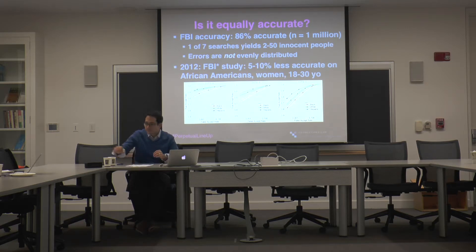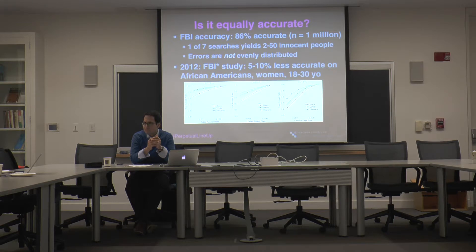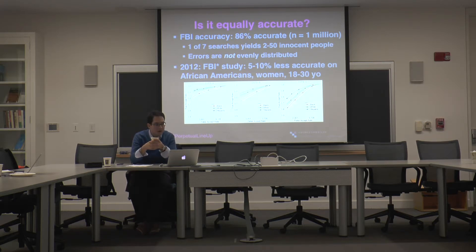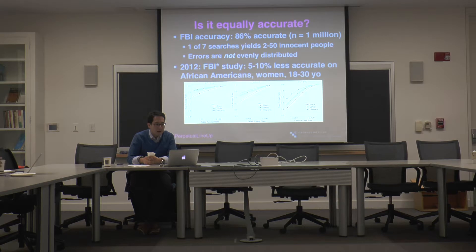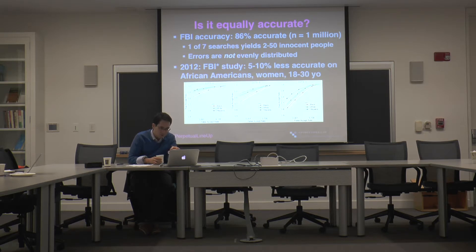Question: Was it the same photo in the database or a different photo of the same person? It's another picture — if you're searching for an identical picture, you just go pixel by pixel. Some caveats: there is too little research on errors across demographic groups, and there should be more. But one of the most prominent studies has suggested — and others have followed similar lines — that this technology is 5 to 10 percent less accurate on African Americans, women, and individuals aged 18 to 30.